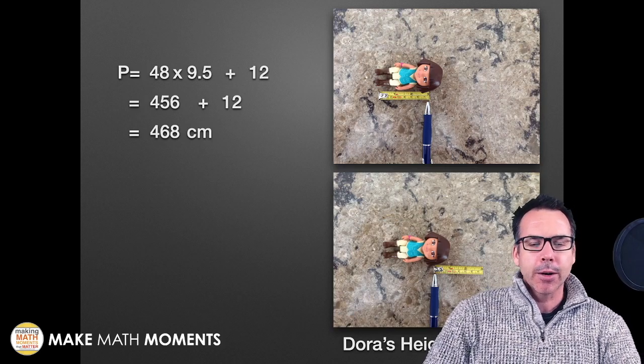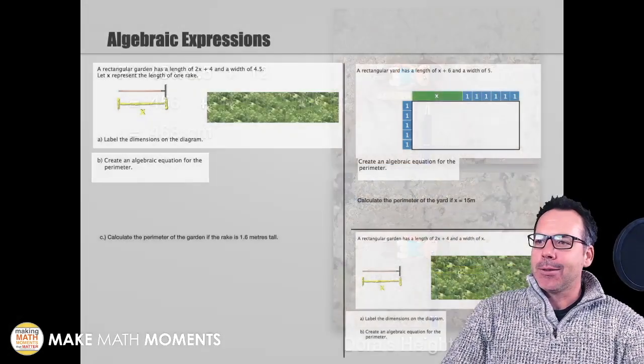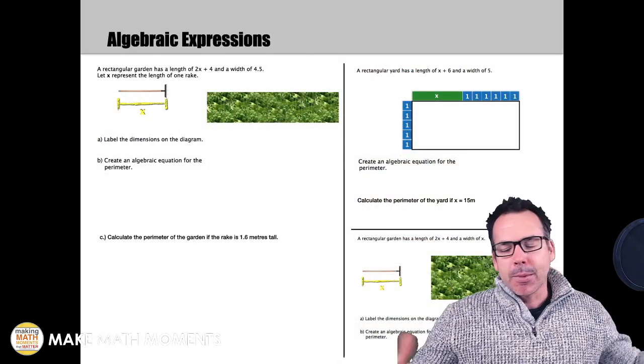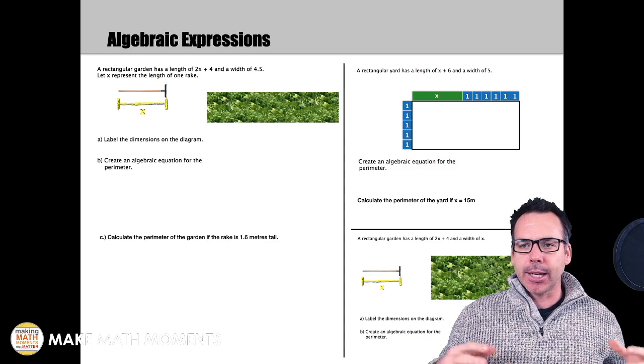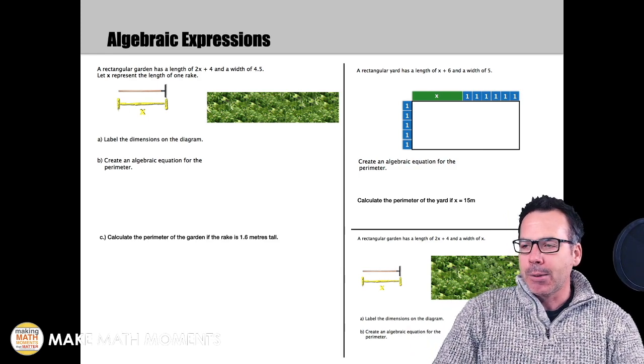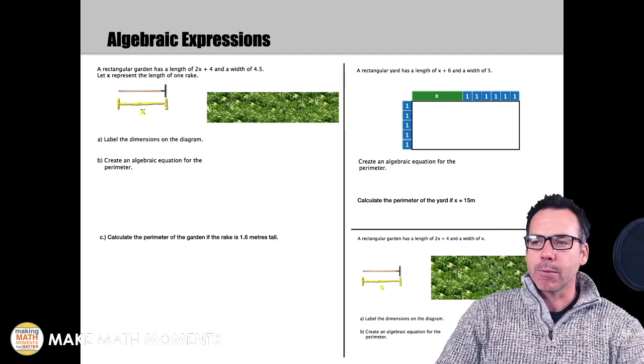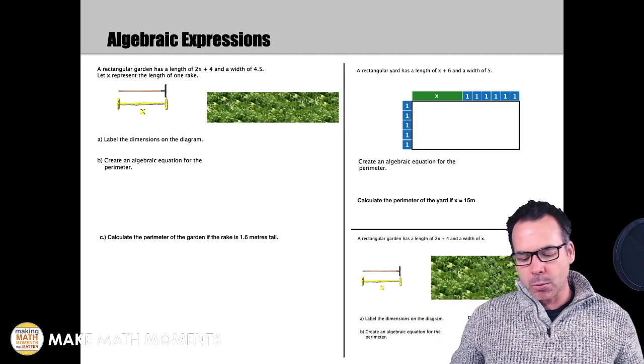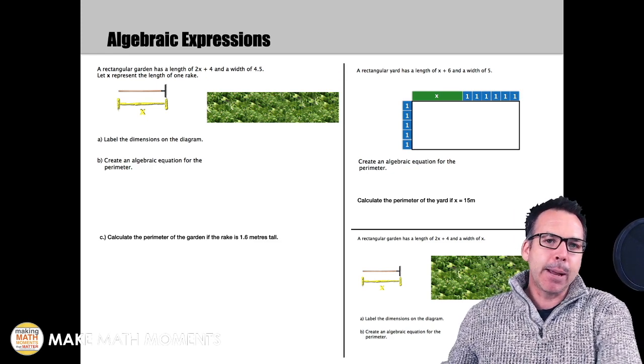Once students know that, they can start to formulate a strategy on finding the area. Some students will add up all the Doras. The power in grouping is going to become very clear to students as a very efficient strategy. Let your students work here and see what they come up with. One student might group it one way and another might group it differently. Then you can bring those solutions together and talk about that power in grouping.